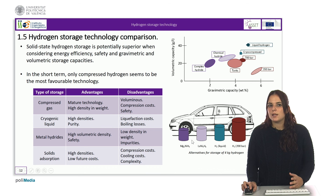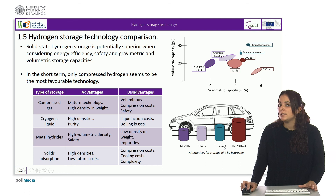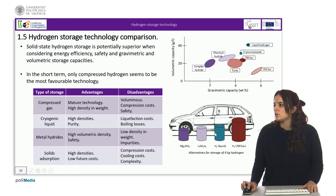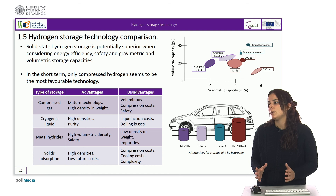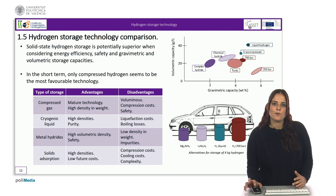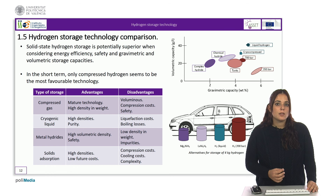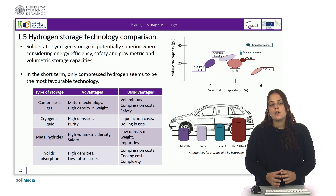In the picture below, we can see a comparison of the different storage tanks when using each of the storage technologies mentioned. As we can appreciate, the gaseous storage is quite large compared to the equivalent storage using hydrides. In summary, although by gravimetric and volumetric capacity values, liquefied hydrogen and some hydrides appear to be the most advantageous, several associated problems significantly decrease the efficiency of these technologies. In the short term, only compressed hydrogen combines a series of factors that make it the most favorable technology for storing hydrogen in a vehicle. With this, we conclude the part on the different options to store hydrogen.